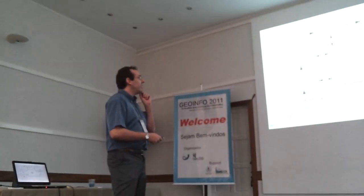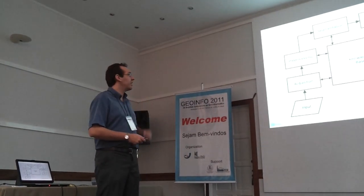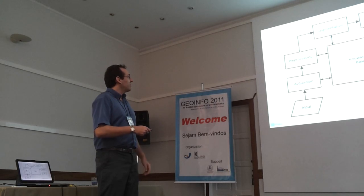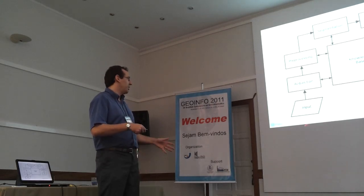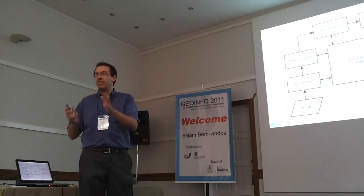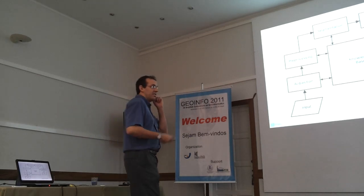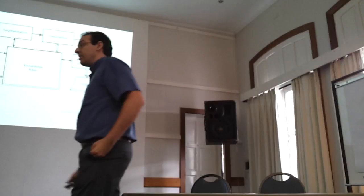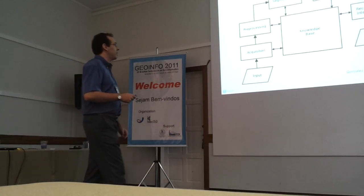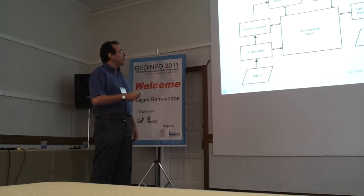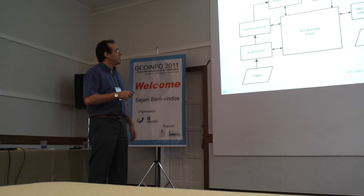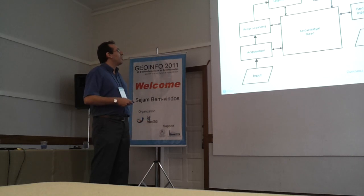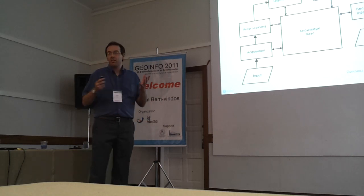Looking at the basic outline of image processing, we have an input — in this case a remote sensing image, which is the target of this work. We acquire this image and preprocess it. This work will deal with segmentation. After segmentation, we have the phases of description, recognition, and interpretation, and finally the output. All of these steps are connected to our knowledge base.